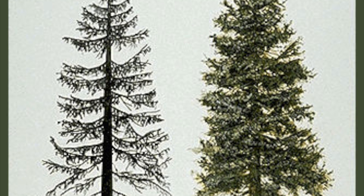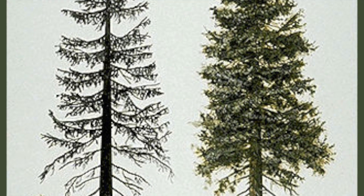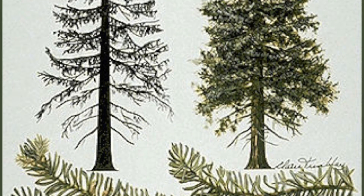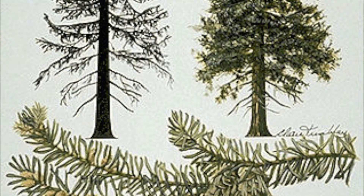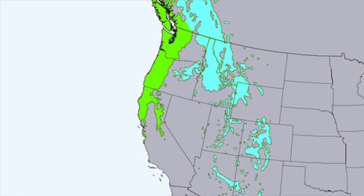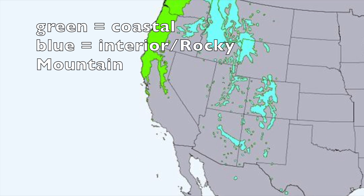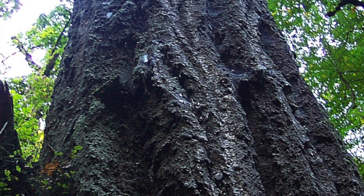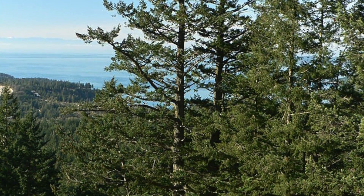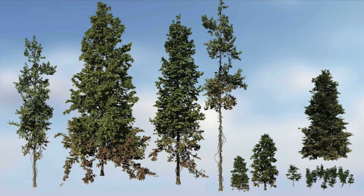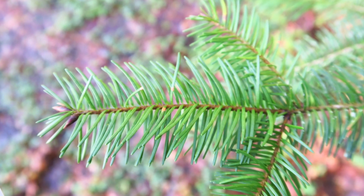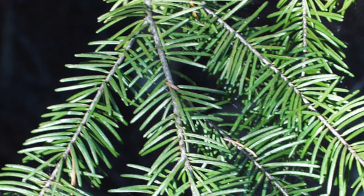Not to be mistaken with true firs, Douglas firs are under the genus Pseudotsuga, or 'false hemlock.' There are four to six species worldwide, native to western North America and East Asia. When you hear 'Douglas fir,' it typically refers to Pseudotsuga menziesii, native to western North America. It's split into two subspecies: the coastal and the interior or Rocky Mountain. The coastal Douglas fir is a monster — the second largest conifer in the world, up to 100 meters tall. The interior will be more like 25 to 35 meters at maturity.